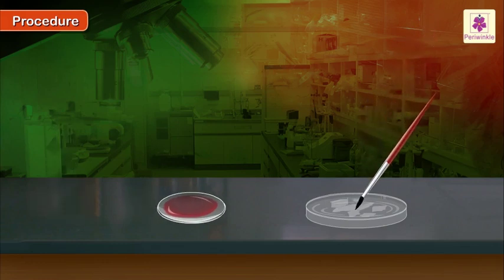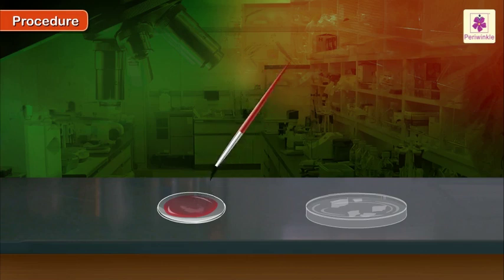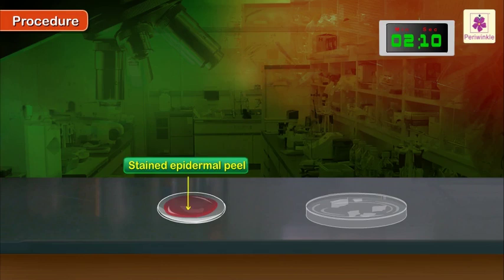Using a pointed brush, place a piece of trimmed peel in the watch glass for about 1-2 minutes for staining.